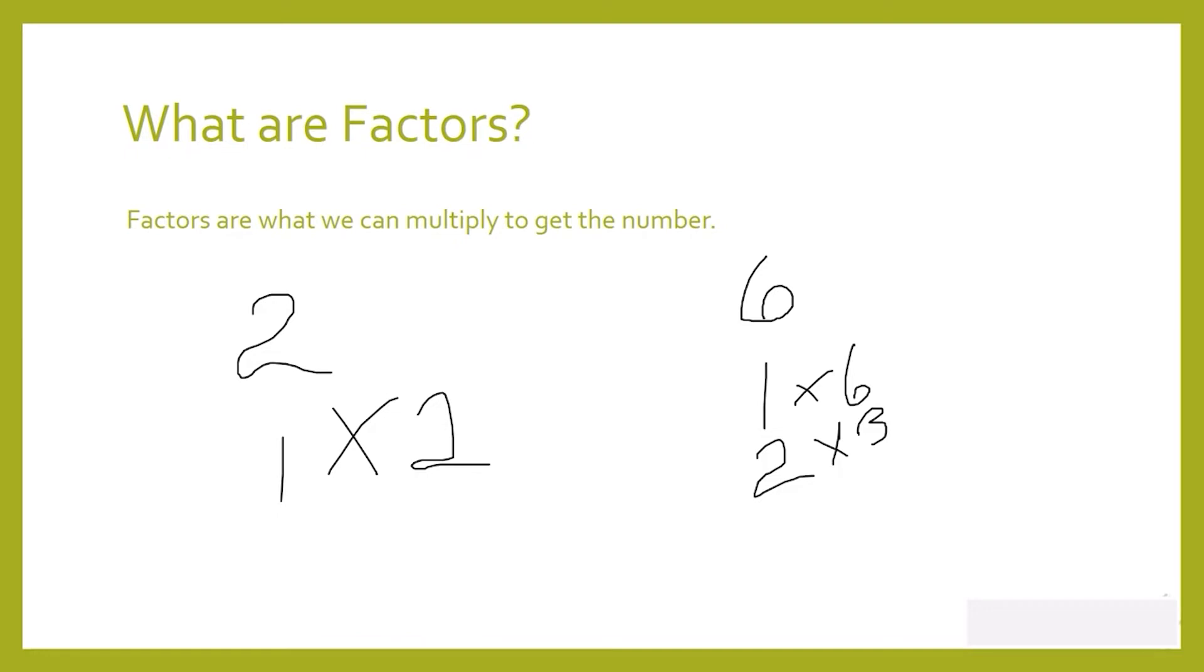If we think of the number seven, what numbers can we multiply to give us seven? Only one and seven, so seven has two factors. Let's think of the number eight. What are the factors of eight? You have to think about what numbers you can multiply to give you eight. Those numbers are the factors. So one times eight will give us eight, so one and eight are factors of eight. Two times four will give us eight, so two and four are also factors of eight.